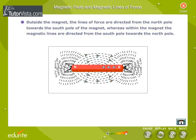Outside the magnet, the lines of force are directed from the north pole towards the south pole of the magnet. Whereas, within the magnet, the magnetic lines are directed from the south pole towards the north pole.